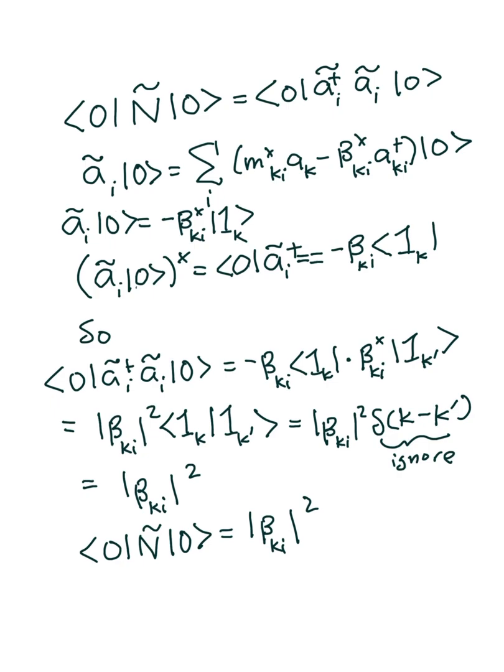Just as we expected, the number of particles we get is not zero, meaning that when a flat space observer sees zero particles, for a curved space observer there will be particles measured, and the number of particles is equal to beta squared.